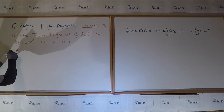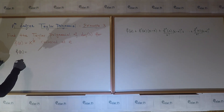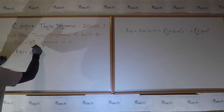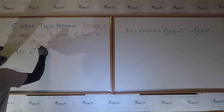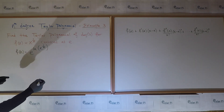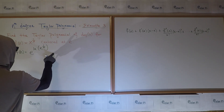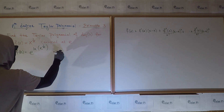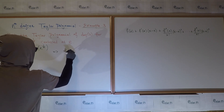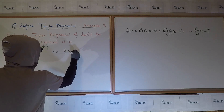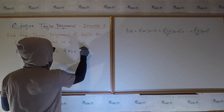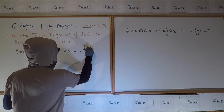Now our function f, we want to rewrite so that we can find the derivative. We rewrite it as e to the ln of x to the 1 over x. Using properties of the natural log, we can write that f of x is equal to e to the 1 over x times ln of x.